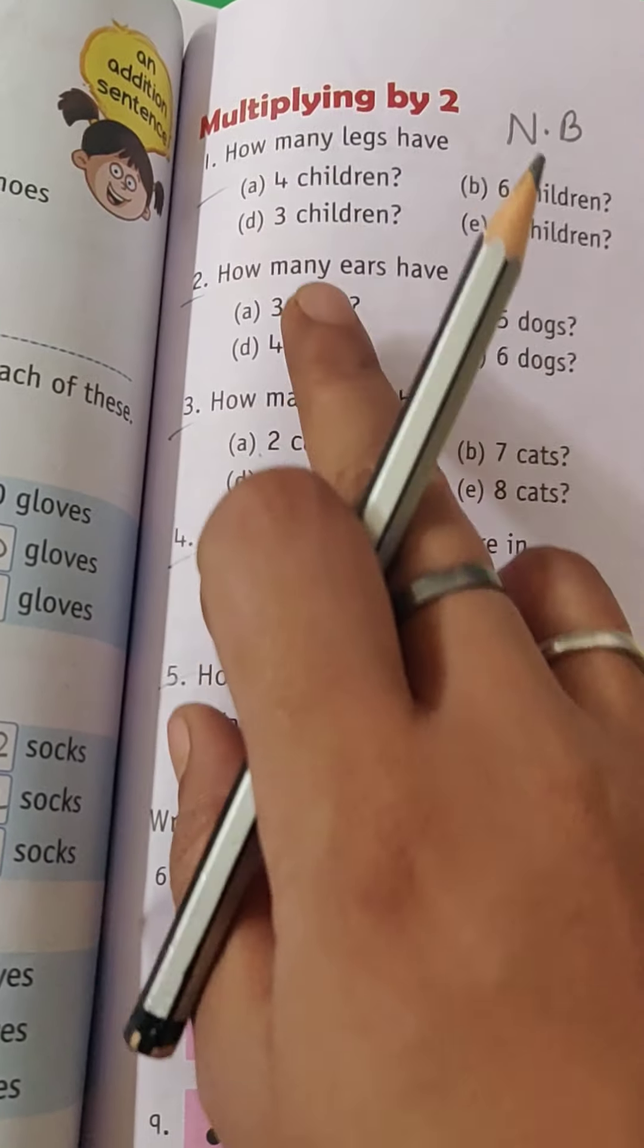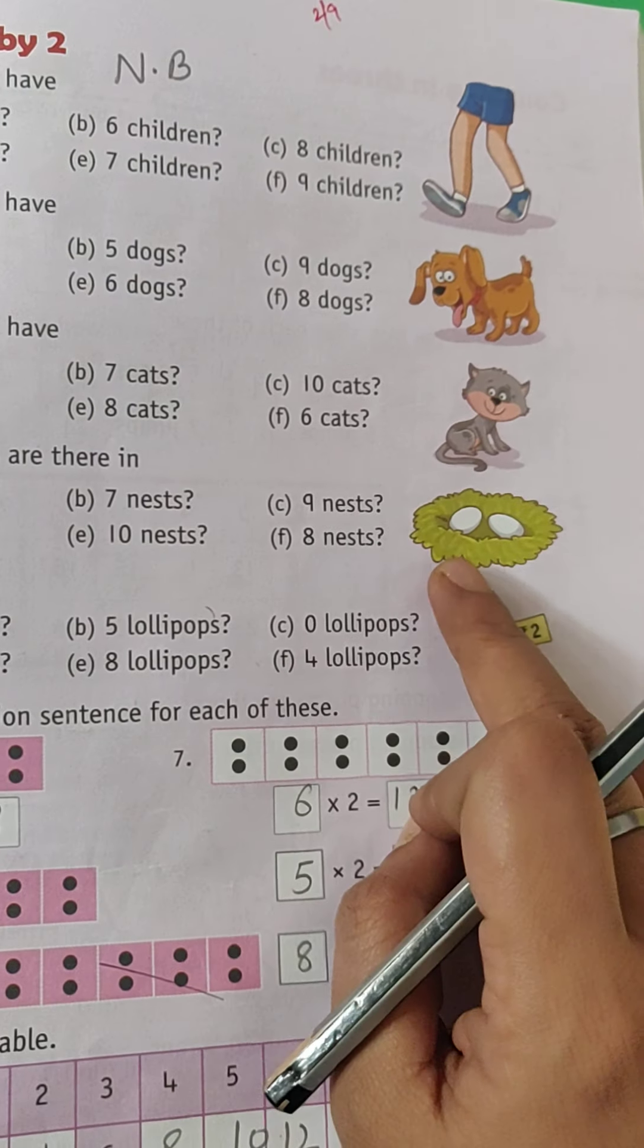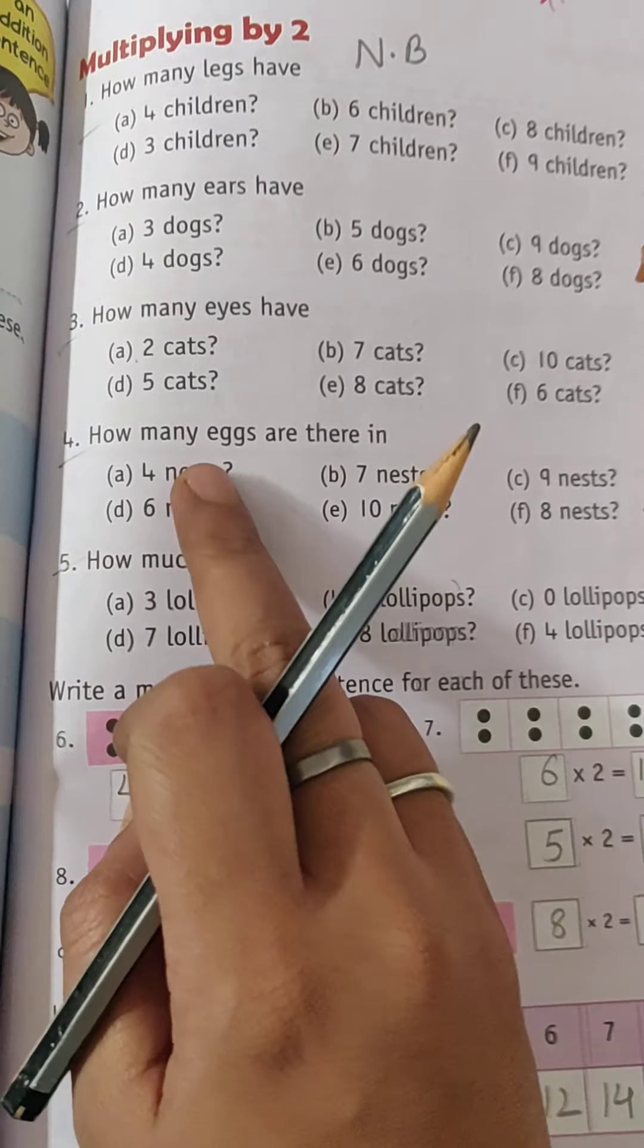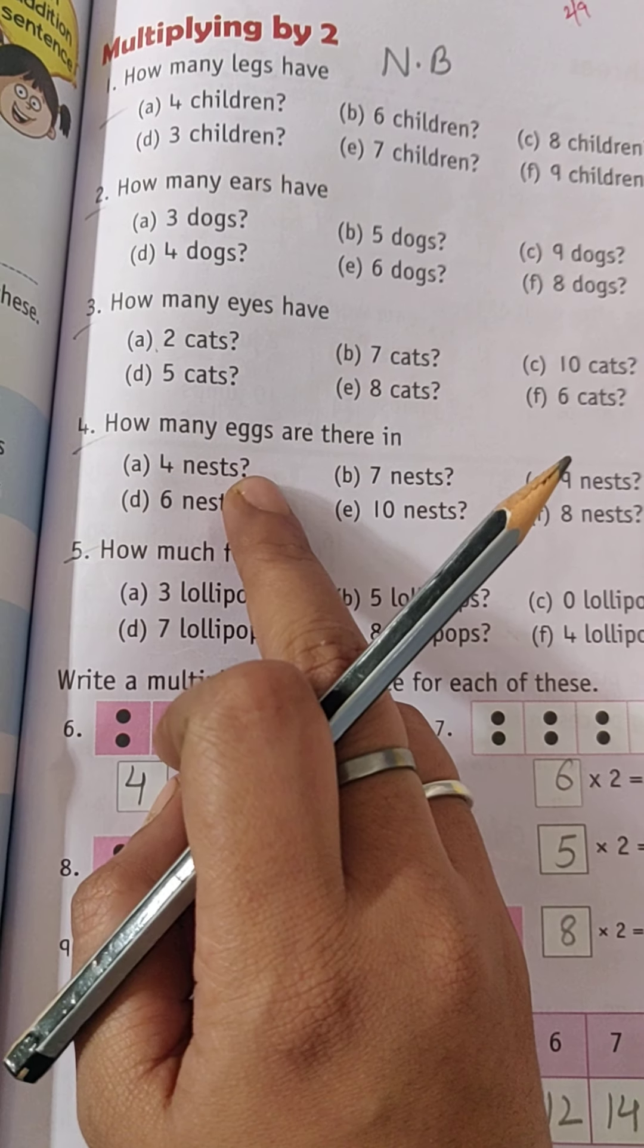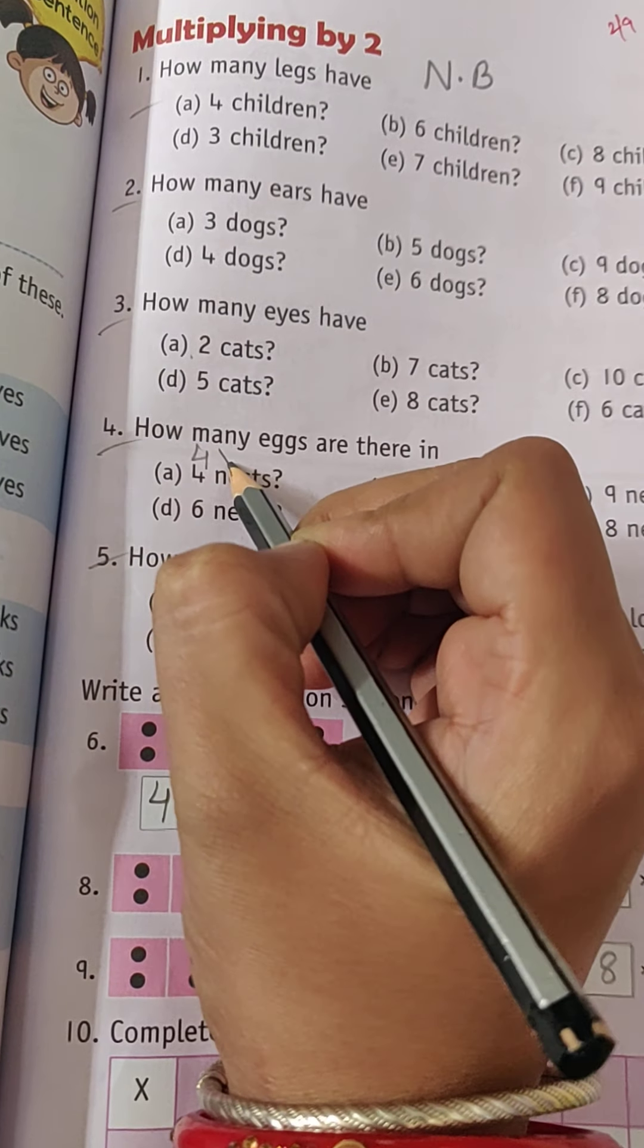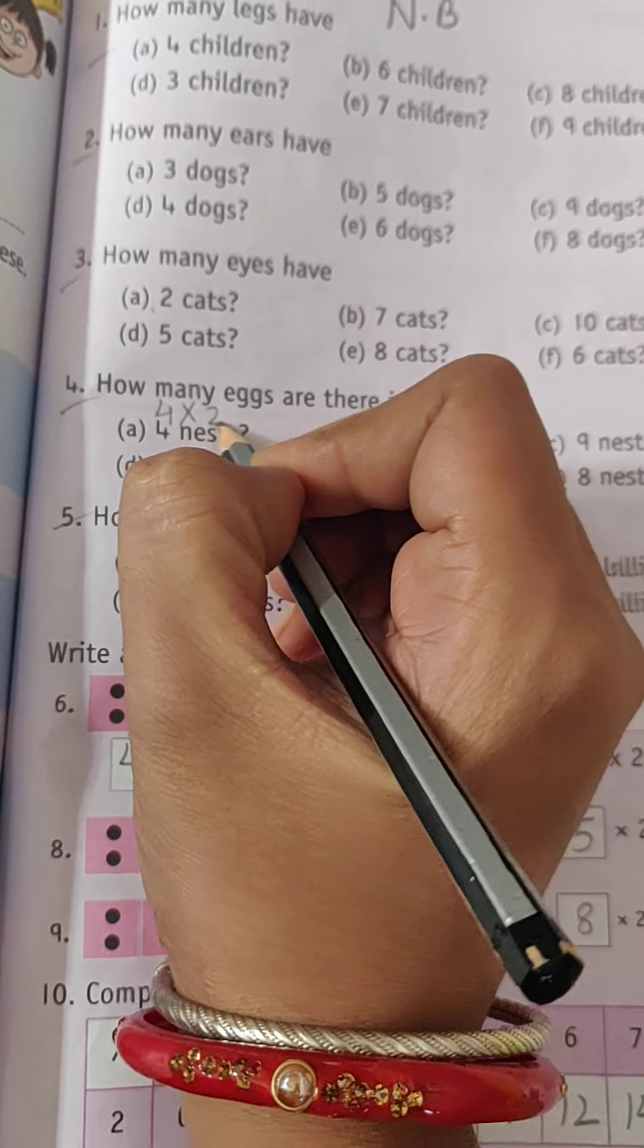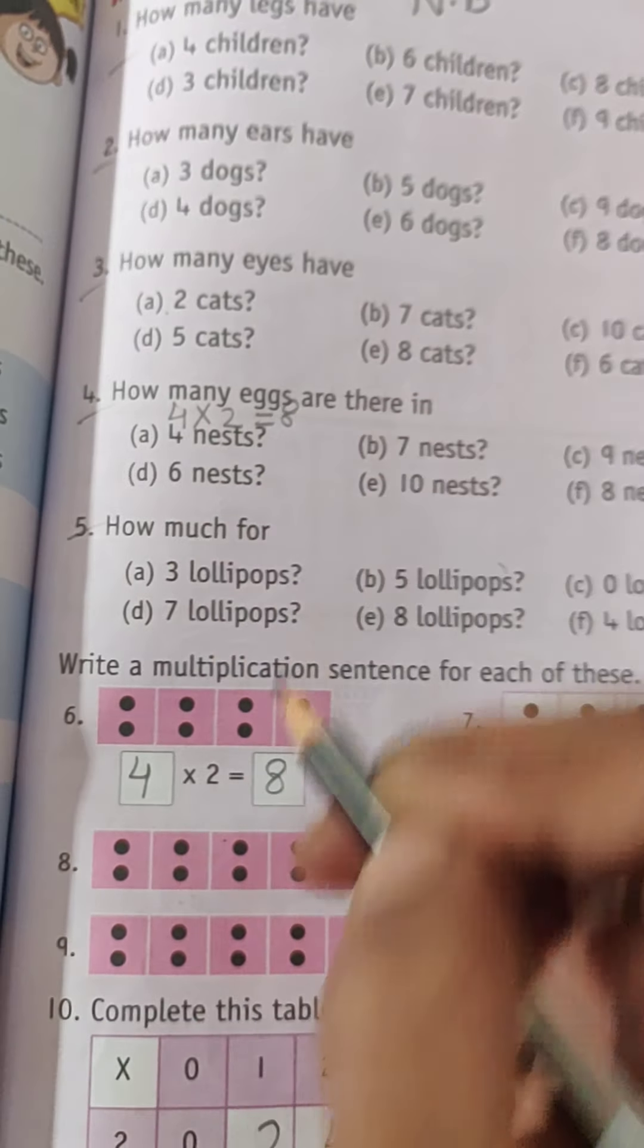Then you have these questions - if you know there are two eggs in one nest, then in four nests how many? You just have to write four at first place, and how many eggs in one nest? Two. Then you will get eight. In this way you have to solve these questions.